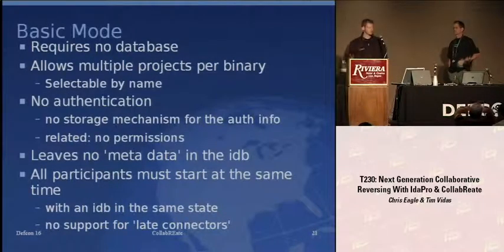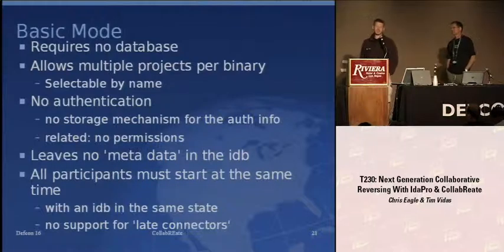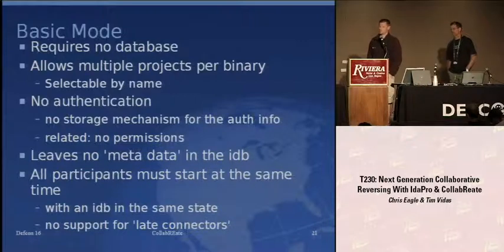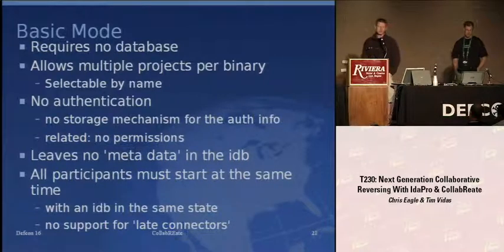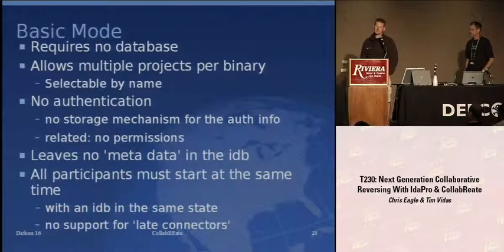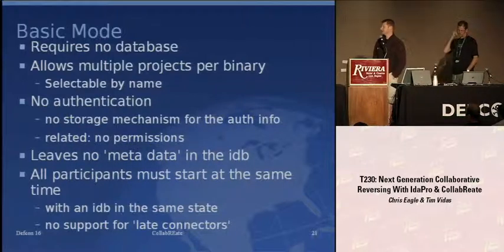Basic mode requires no database but still allows multiple projects, so different teams can work on various reverse engineering projects — they just won't have persistent storage or authentication. Database mode supports PostgreSQL 8.2 or higher and MySQL, due to how SQL statements are formed. This mode requires authentication — basic RFCs for CHAP and MAC. All participants start by running auto-analysis in their version of IDA, then launching the plugin and connecting. In practice, auto-analysis results across versions get close enough. All updates posted by any collaborating user are archived; when a new user connects and joins the same project, they get all updates to that point, regardless of their IDA version.